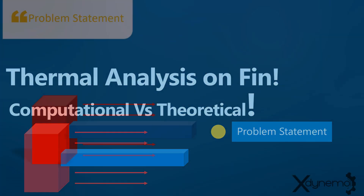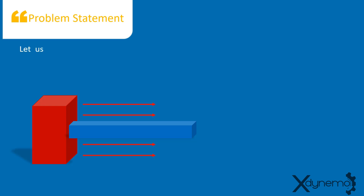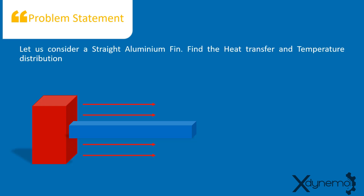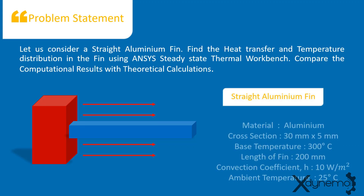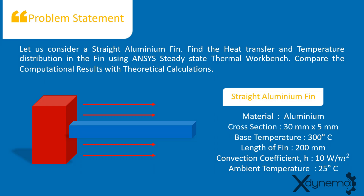Here is the problem statement. Let us consider a straight aluminium FIN. Find the heat transfer and temperature distribution in the FIN using ANSYS Steady-State Thermal Workbench, and compare the computational results with theoretical calculations. We will consider a straight aluminium FIN with rectangular cross-section of 30 mm by 5 mm. The base temperature is 300 degrees Celsius, the length of FIN is 200 mm, and the FIN is placed in an environment with convection coefficient of 10 Watt per meter square and ambient temperature of 25 degrees Celsius.